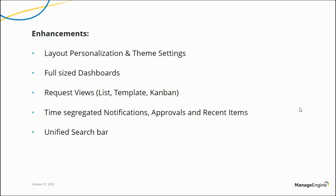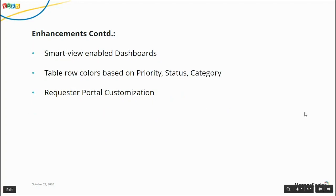We now have full-sized dashboards. The request views are split into three: a list view, a template view, and a Kanban view. Notifications, approvals, and recent items are now module-segregated and time-segregated. You also have a unified search bar for a unified search experience — you could search for any data available in any module in the application.